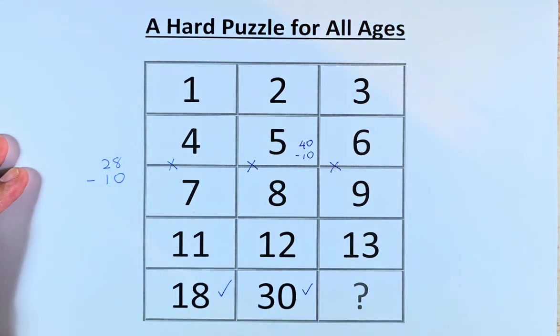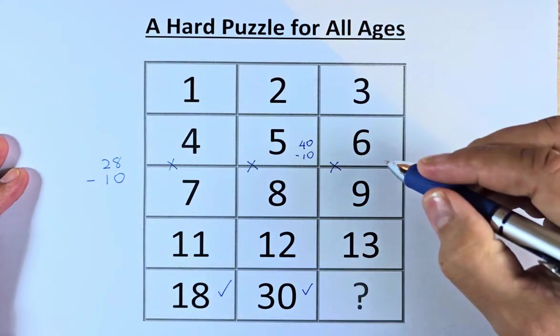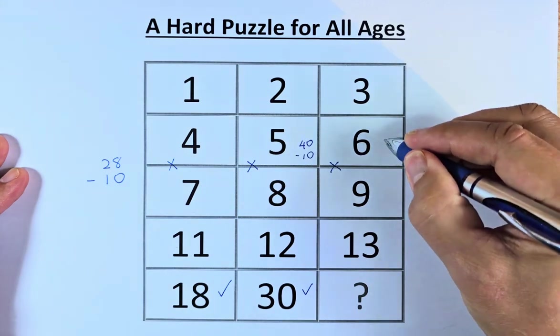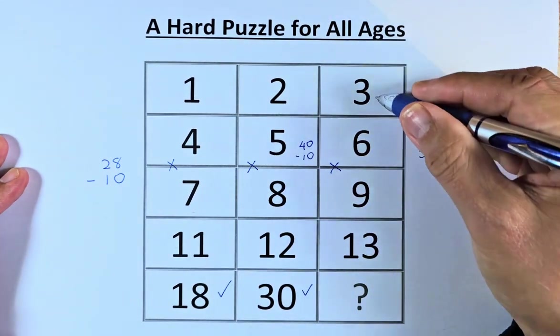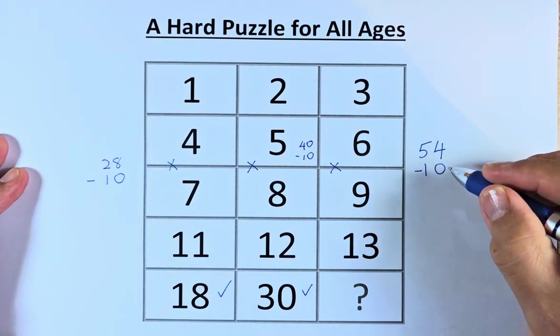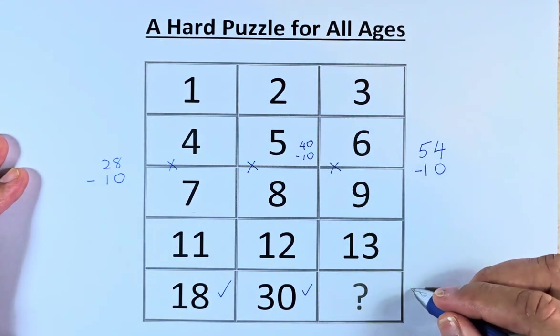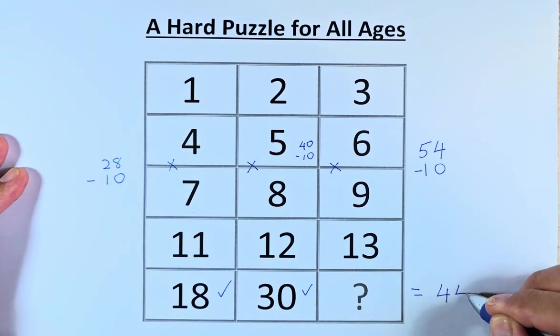So in our final column, we have 3, 6, 9, 13. You multiply 6 times 9, which is going to be 54. And then we're going to take 13 minus 3, which is 10. We're going to minus them. 54 minus 10, and the question mark is going to be 44.